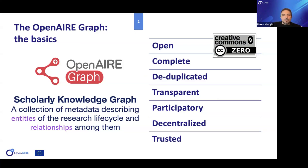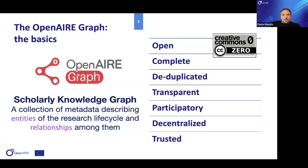I'm sure you've heard of the notion of scholarly knowledge graphs — that's what the OpenAIRE Graph is about. This SKG nomenclature is becoming a trend at least in Europe. They describe collections of metadata records describing entities in the research life cycle: research products, organizations, people, services — whatever has to do with the overall scientific workflow.